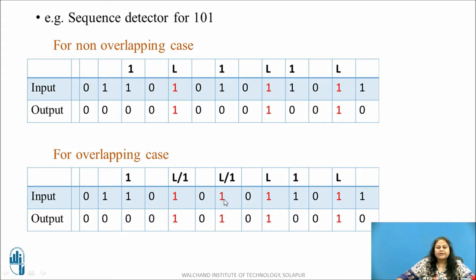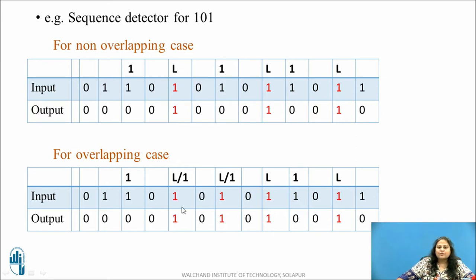Similarly, the next bit is again 1, so this cannot be the start bit for the next sequence. So this is the first bit of the next sequence: 1, 0, 1 and the output is made 1 again. Similarly, the next bit is again 1, so this cannot be the start bit. So let us assume this as the start bit: 1, 0, 1. Finally, this is the last bit of the sequence 101 and the output is made 1. So here the last bit of the previous sequence is acting as the first bit of the next sequence — 1 bit overlap is taking place. Thus this method is known as overlapping type.